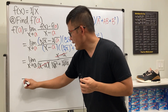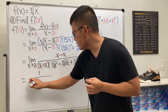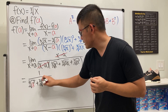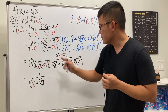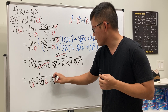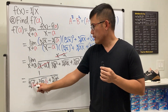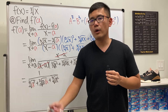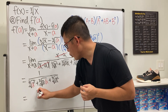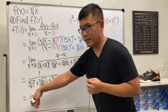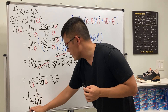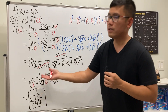Now we plug a into x. We have one over: cube root of a squared, plus cube root of a times a which gives another cube root of a squared, plus cube root of a squared. That's three identical terms, each being cube root of a squared, so all together we can write this as one over three times the cube root of a squared.